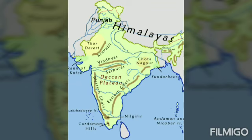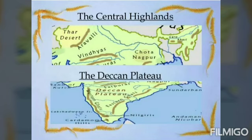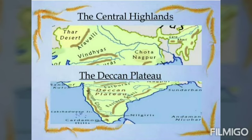It is surrounded by various hill ranges: the Aravalli range on the northwest, the Rajmahal hills on the northeast, the Eastern Ghats on the east, and the Western Ghats on the west. River Narmada divides the Southern Plateau region into two parts — the Central Highlands to the north of River Narmada and the Deccan Plateau to the south of River Narmada.